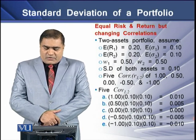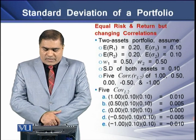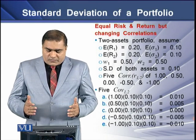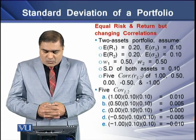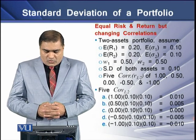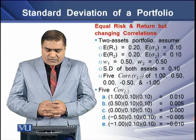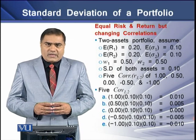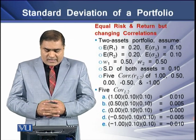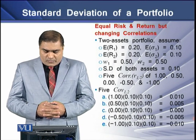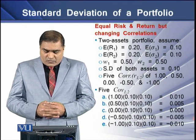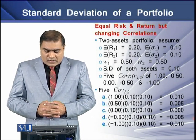The standard deviation of both assets is 10%. We have five correlation values for these two assets: 1, 0.5, 0.0, -0.5, and -1. Using this data, we determine five covariances. For case A, covariance is 0.01; for B, 0.005; for C, 0; for D, -0.005; and for case E, -0.01.